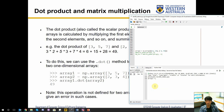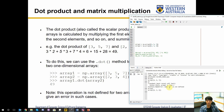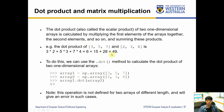Let's create array1 as np.array([3,5,7]) and array2 as np.array([2,3,4]). We can then call array1.dot(array2), passing array2 as input, and it gives us 49 as expected. For single-dimensional arrays, the dot product is very easy to apply this way.